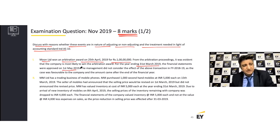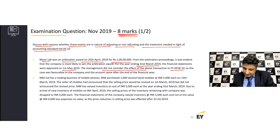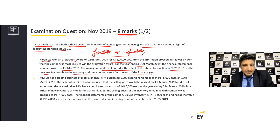We address whether this event is an event after the reporting period — that's the first aspect — and then whether it is an adjusting or non-adjusting event. We are further told that management did not consider the effect in 2018-19 as the case was favorable to the company and the amount came after the year end. What you want to remember: it does not matter whether the event is favorable or unfavorable. The prudence concept is not applicable here. All material, significant events — whether favorable or unfavorable — if adjusting, need to be brought into the accounting.